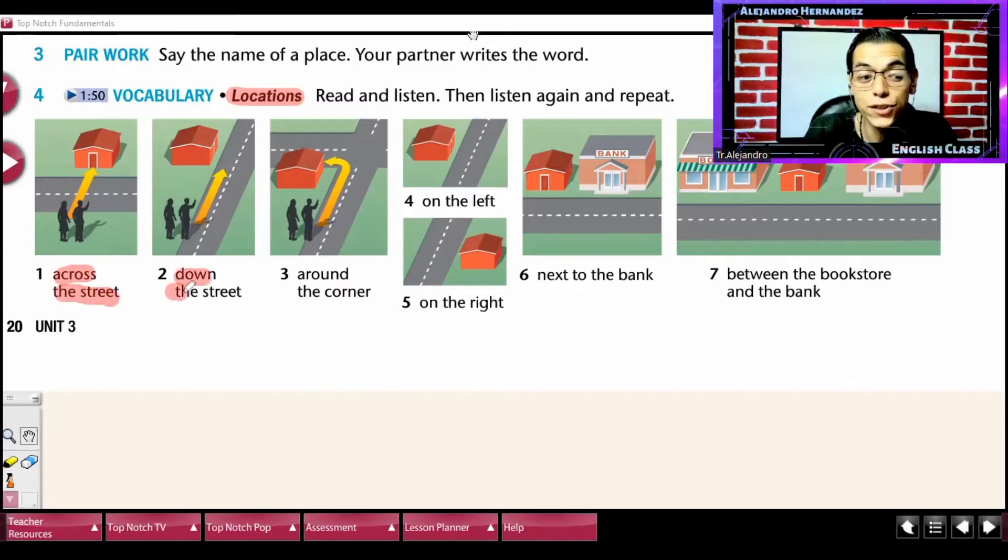Down the street es bajando la calle. Around the corner, que es girando, girando en la esquina.